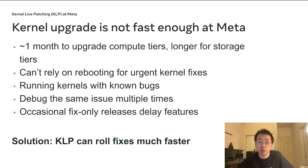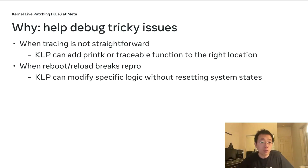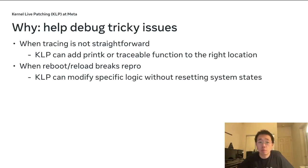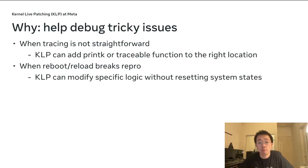The solution is to use KLP, which can roll fixes much faster. Another case where KLP is helpful is when debugging tricky issues. Modern kernels provide many tracing tools, but if you want to trace the exact condition at the middle of a function, it's not easy. KLP can add a printk or a traceable function to the exact location you want to trace, making tracing much easier. When an issue is hard to reproduce and you finally get a live reproduction, you can use KLP to make smaller changes without resetting the system state, making debugging much more efficient.